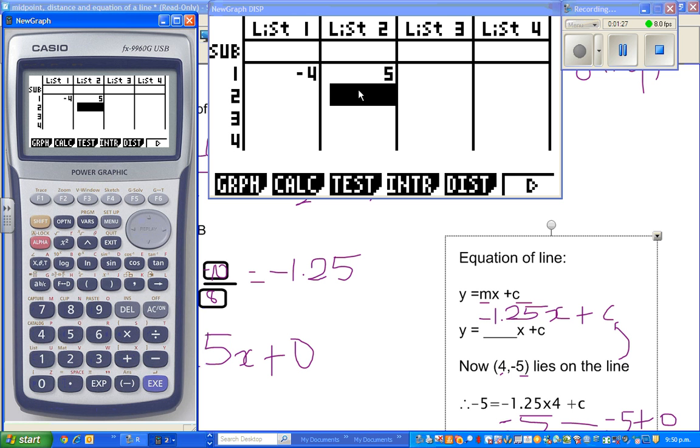I hope you understand. This is your first point, which is negative 4, 5. For the second point, the second point is 4, negative 5.